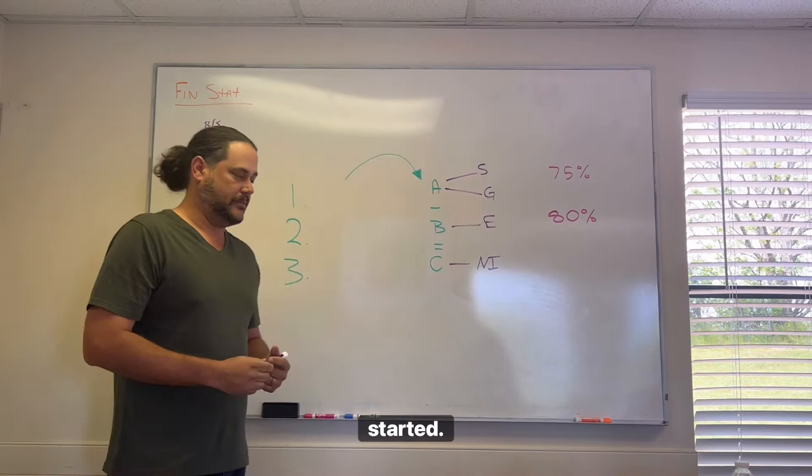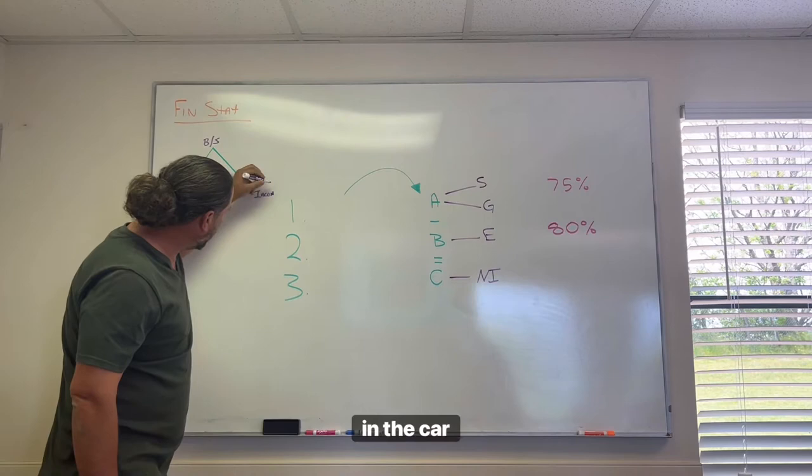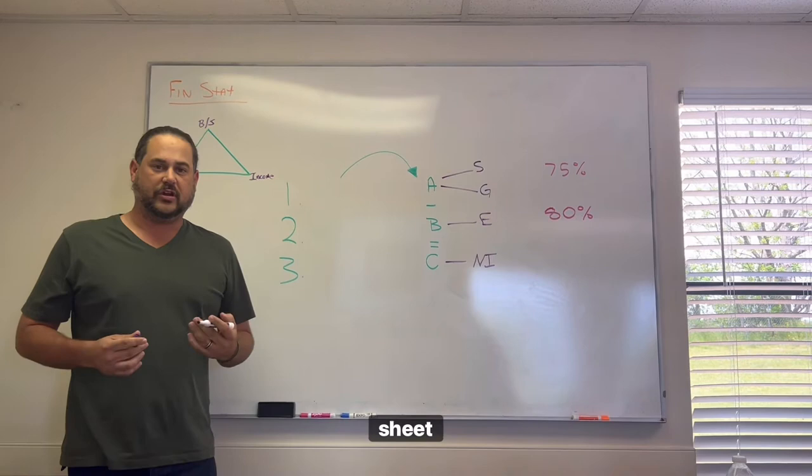We've got balance sheet, cash flow, and income statement. Your income statement varies by business. In the car business, we close our income statement, our balance sheet, and our cash flow statement every month. So what is an income statement?